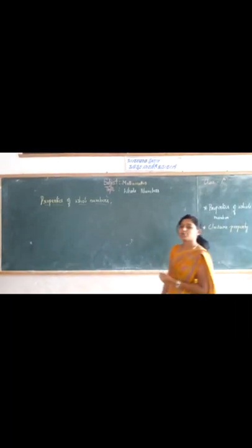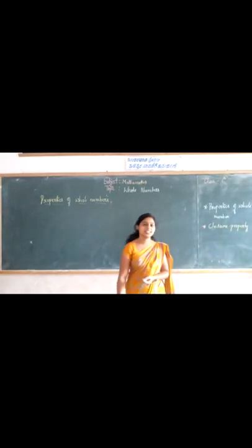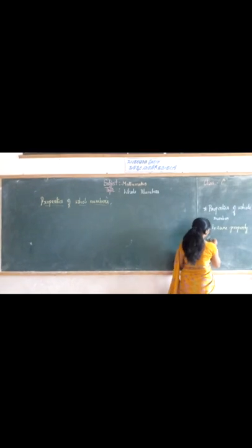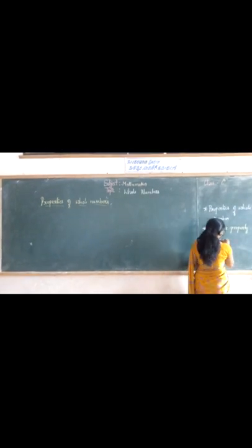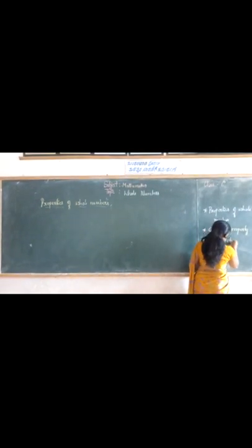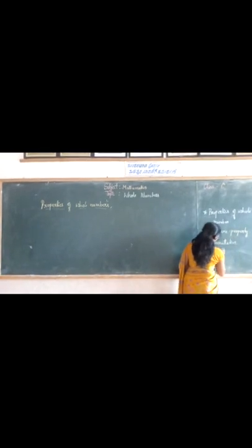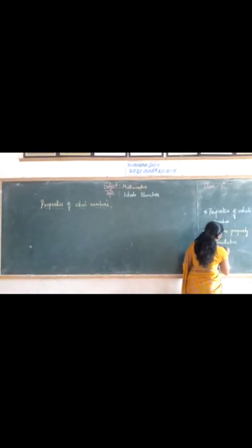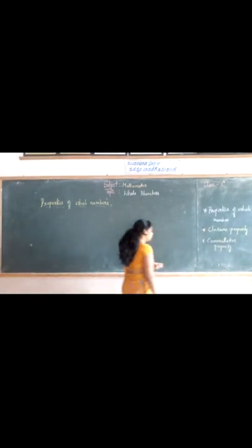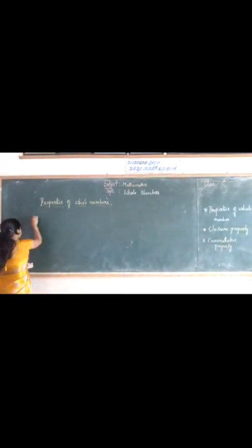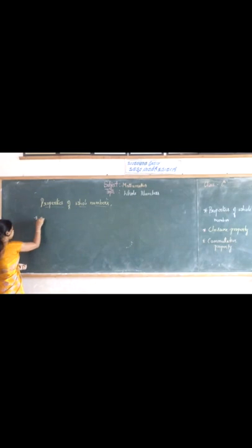The next property is commutative property — commutative for addition and multiplication.